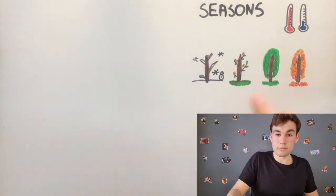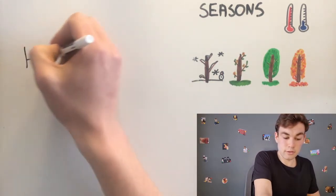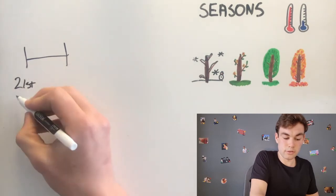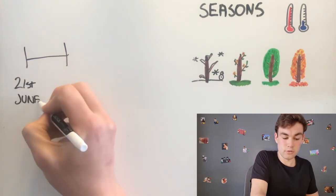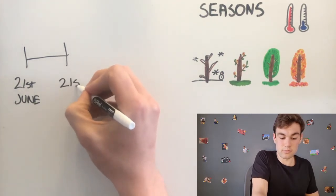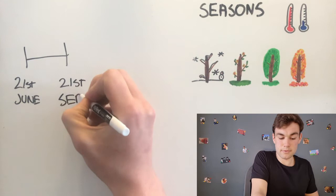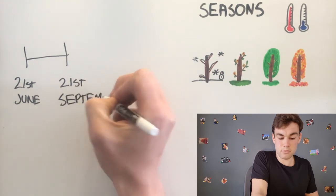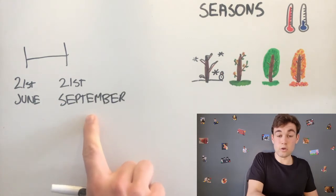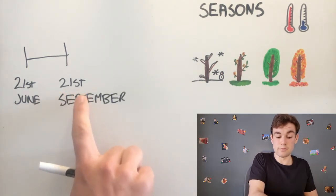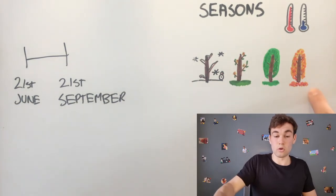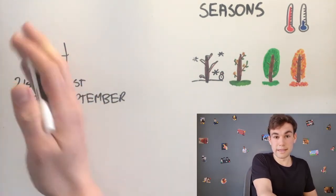The summer starts on the 21st of June and ends on the 21st of September. And on the 21st of September, the autumn or fall begins.